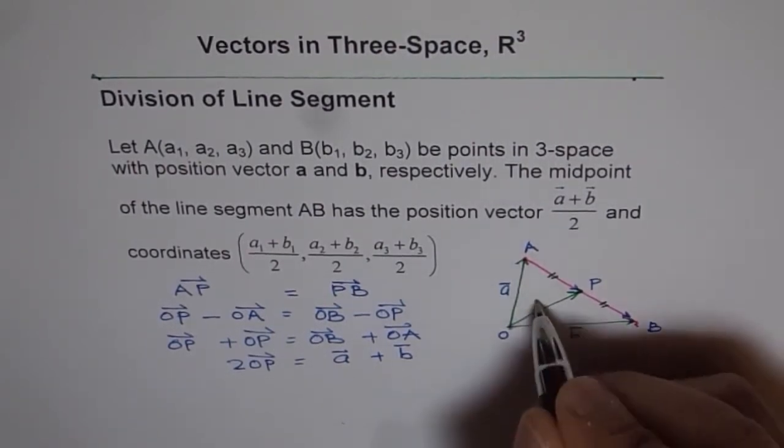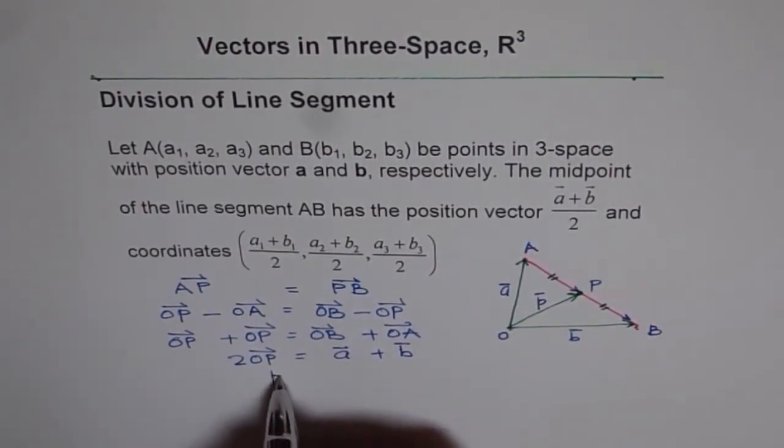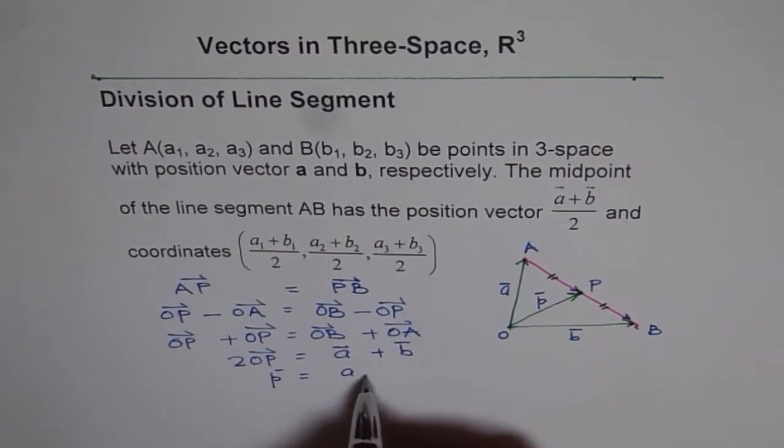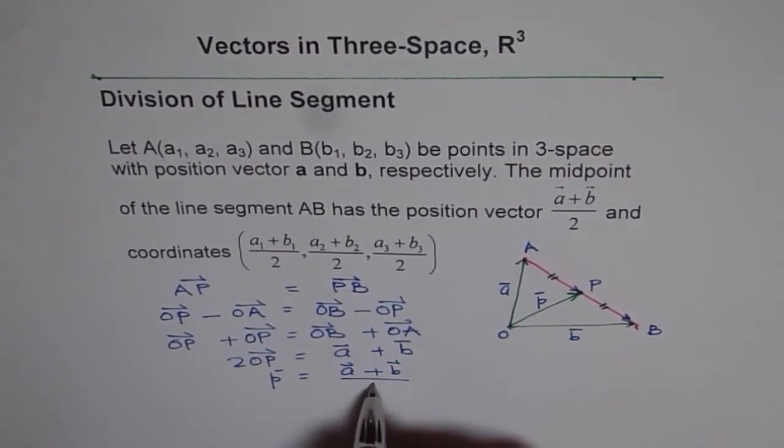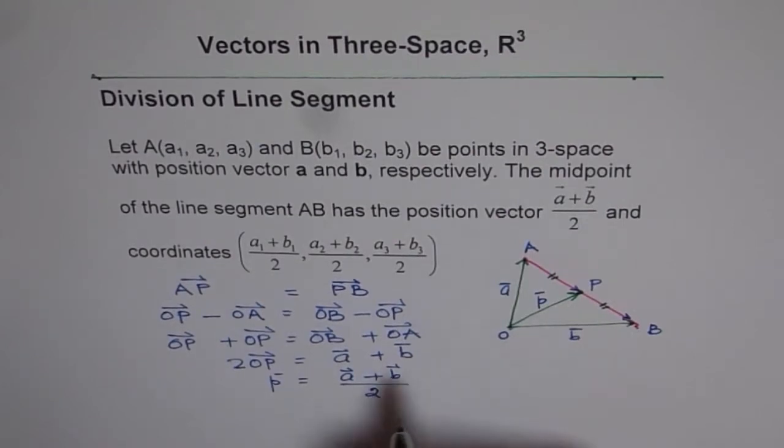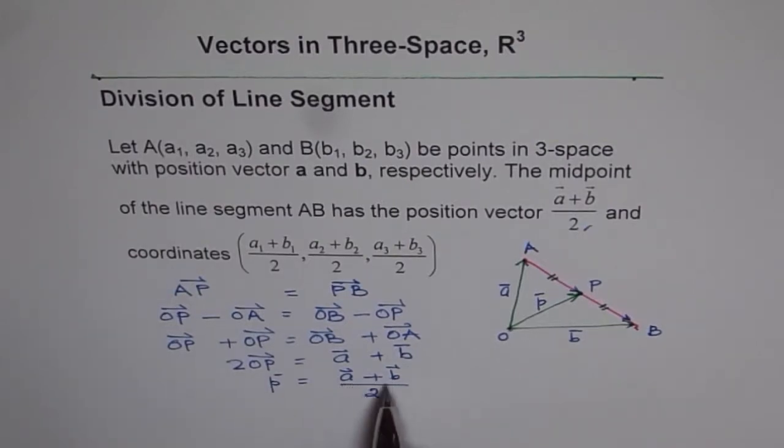And if OP represents position vector P, then we can say position vector P equals vector A plus vector B divided by 2. So that is how we get this. And obviously, if the position vector is A plus B divided by 2, then the coordinates will be as given here.